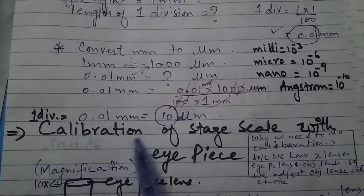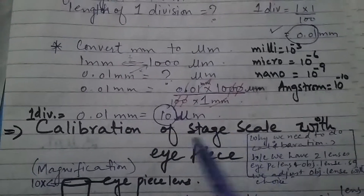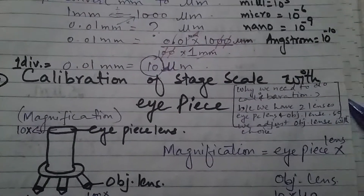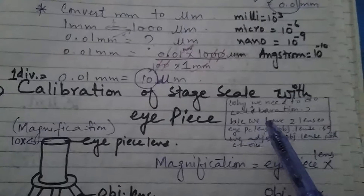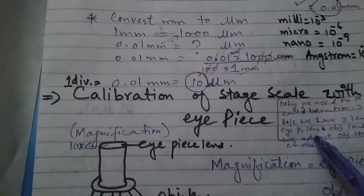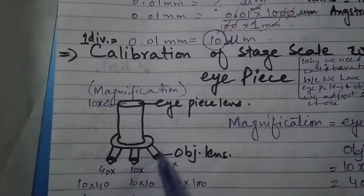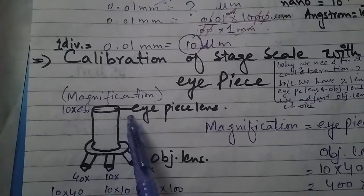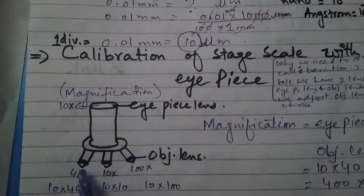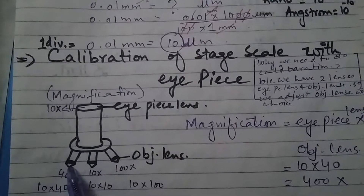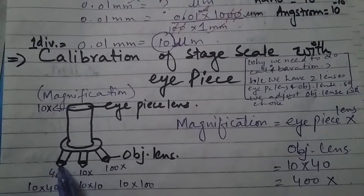Now we need to calibrate the stage scale with the eyepiece (IP) scale. Why do we need calibration? Because we have two lenses in the microscope — the eyepiece lens and the objective lens — and their magnification power is different. This is why calibration is necessary.